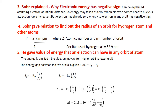Fourth point: Bohr gave the relation to find out the radius of an orbit for hydrogen atom and other atoms. The formula is: radius in the nth orbit = a₀ × n² / Z, where Z is the atomic number and n is the number of the orbit. For hydrogen, where Z = 1 and n = 1, the radius equals a₀ = 52.9 picometers.